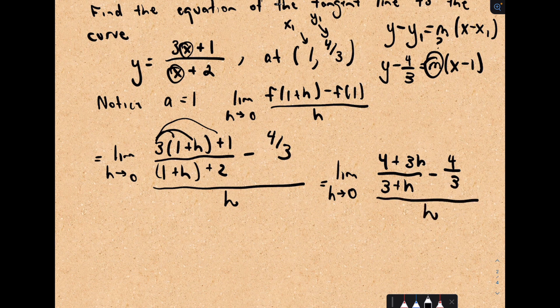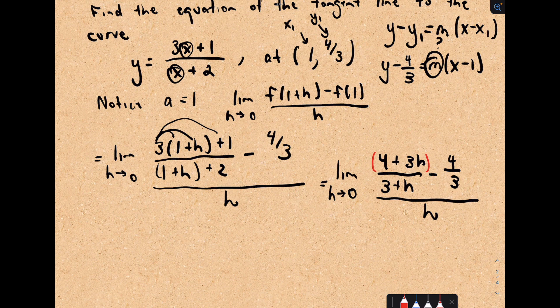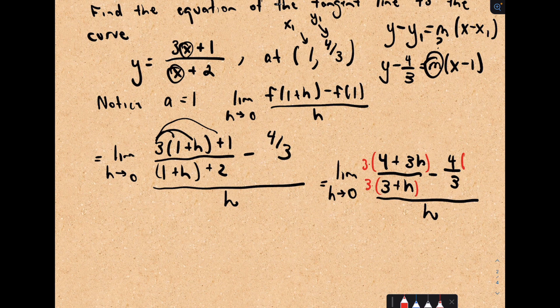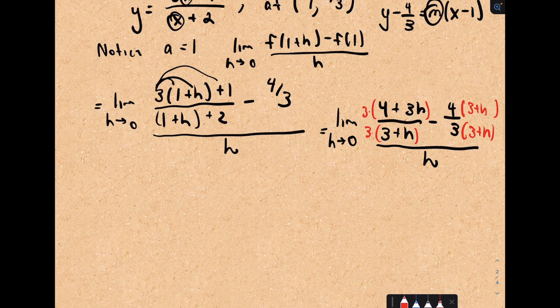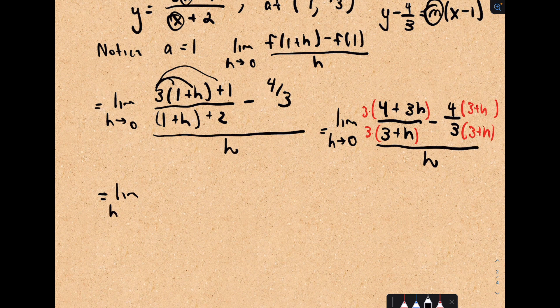I'm going to get common denominators here. I'm going to multiply top and bottom of this first expression by 3, and I'll multiply top and bottom of this other expression by 3 plus h.